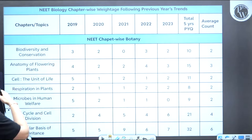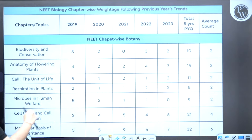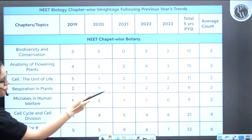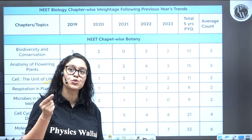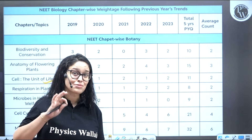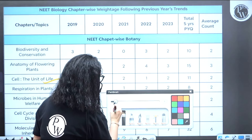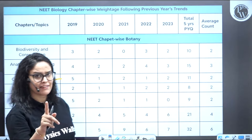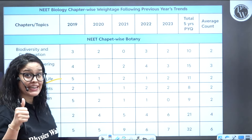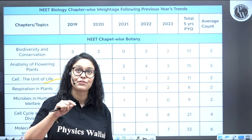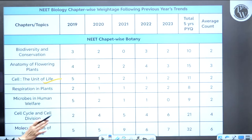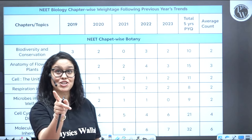The biotechnology unit, human physiology, ecology, genetics and evolution, cell biology, and the reproduction unit are always high priority. Now let's see the averages from 2019 to 2023. Biodiversity and conservation — on average two questions. Anatomy of flowering plants — on average three questions. Cell — two questions. Respiration in plants — two questions. Priorities have changed because now we have very concise chapters. Microbes in human welfare — one to two questions on average. Cell cycle and cell division — very important, on average four to five questions; you cannot skip it.